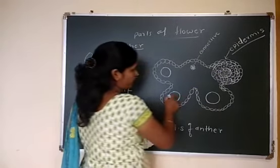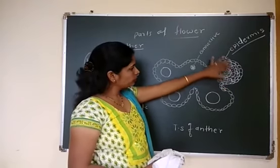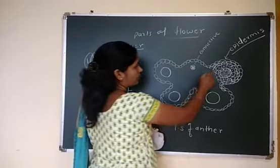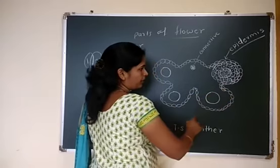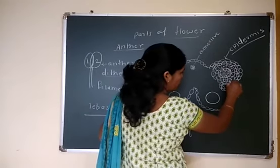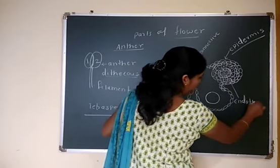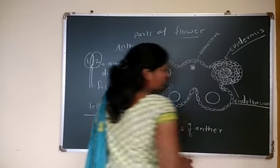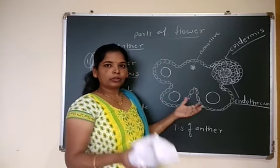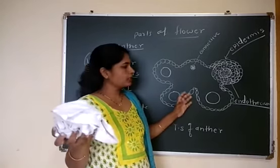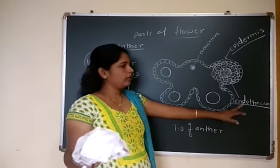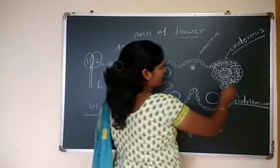This is the TS of anther. The outermost layer is epidermis, which gives protection to the anther. Inner to epidermis there is endothecium. Endothecium helps in dehiscence of the anther, that is rupture of this anther, so that pollen grains can be released. Inner to endothecium there are one to three layers of middle layer.